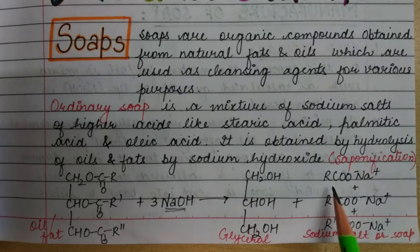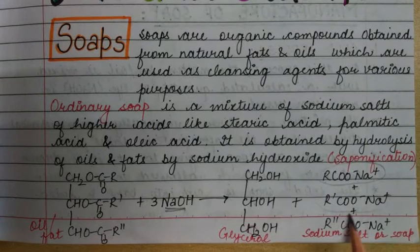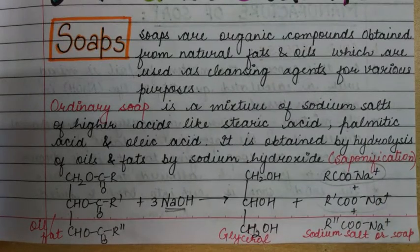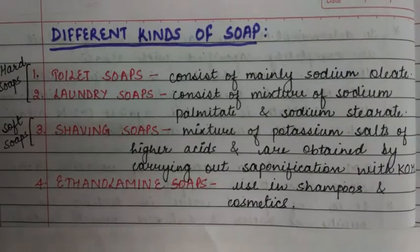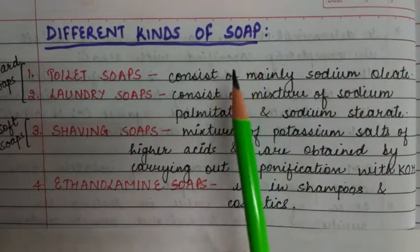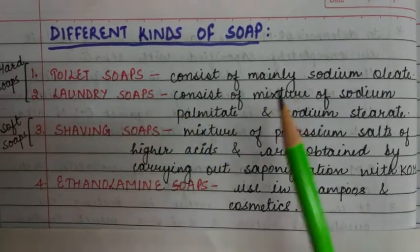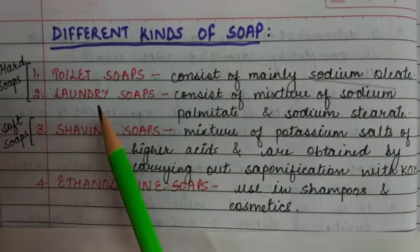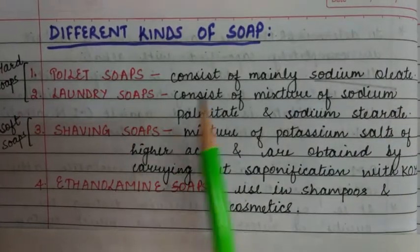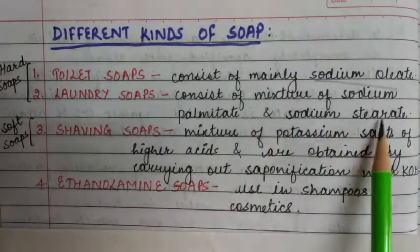The sodium salt, represented as RCO⁻ Na⁺, is a soap. Different kinds of soaps: firstly, toilet soaps — these consist mainly of sodium oleate. Next, laundry soaps — these consist of a mixture of sodium palmitate and sodium stearate.